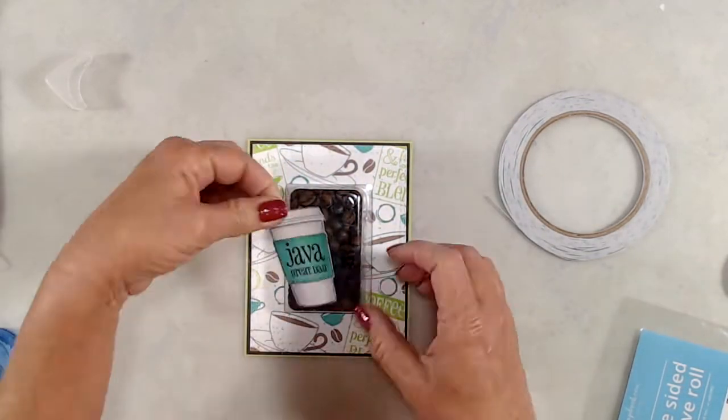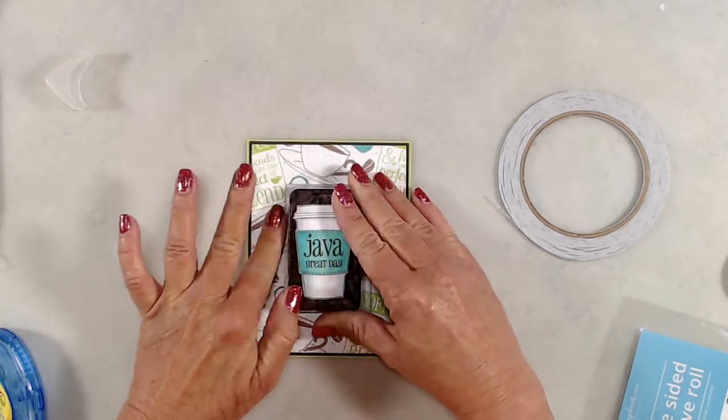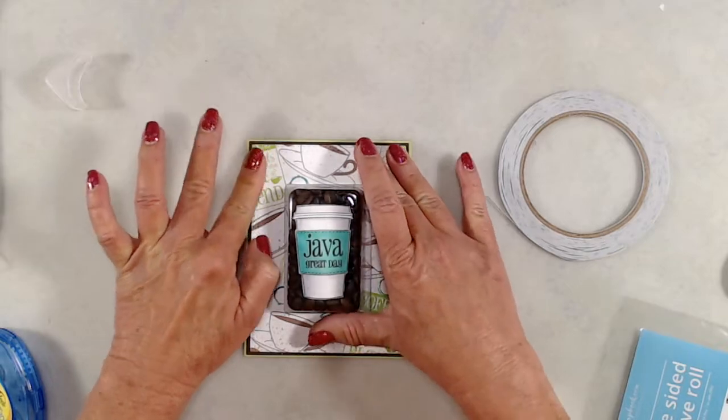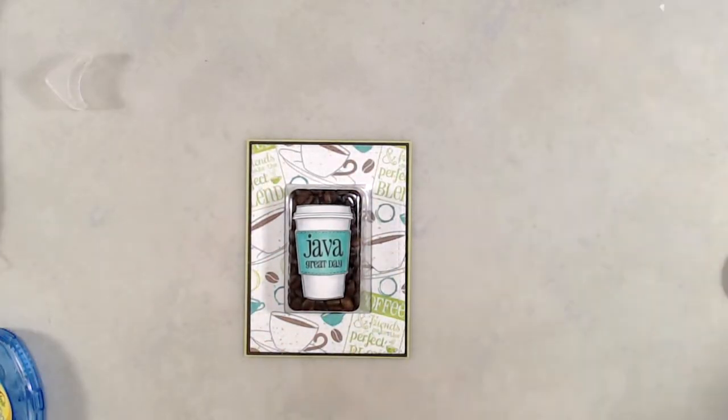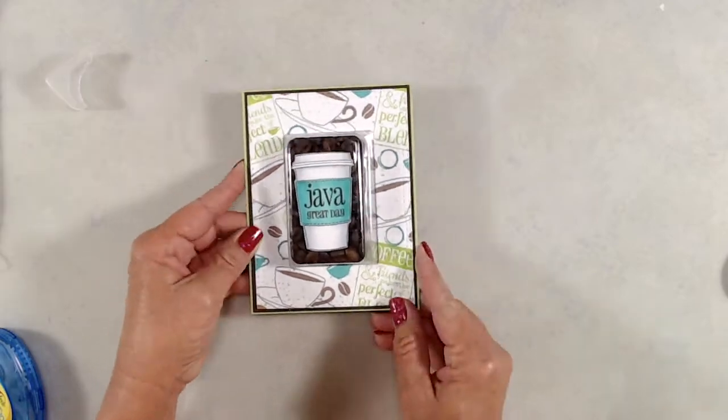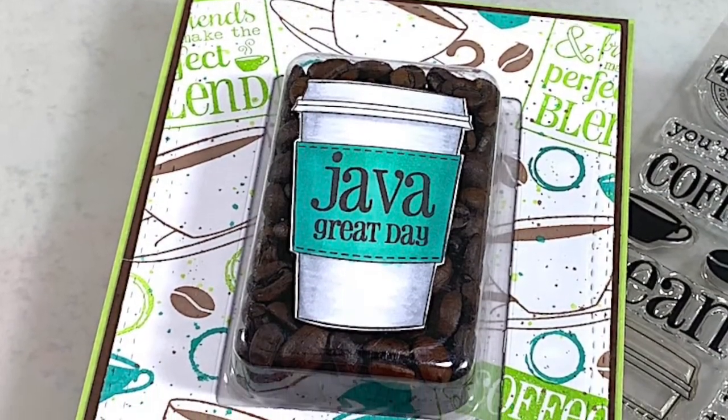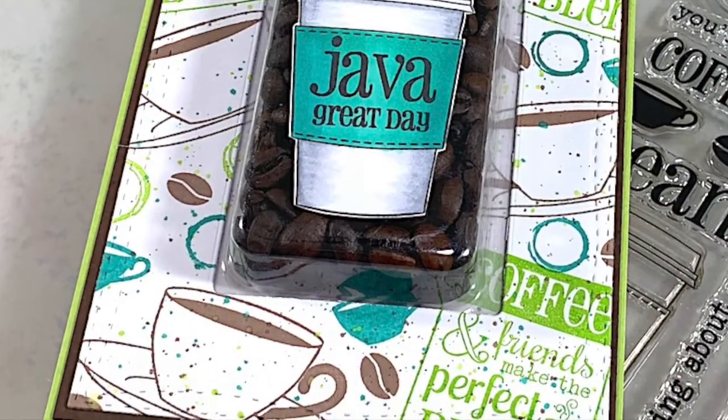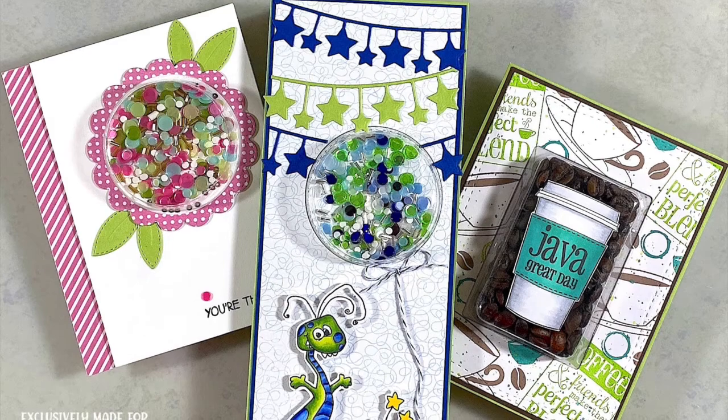Once that was done, to finish up this card, I had added a little coffee cup that I had stamped and colored, also from the Coffee Break stamp set. I used the coordinating die to cut it out, and I used my tape runner to adhere my coffee cup to the front. That is it! That finishes up my video for today. Let me know in the comments below which card is your favorite and what other things do you think you could fill up these little bobble bubbles with.